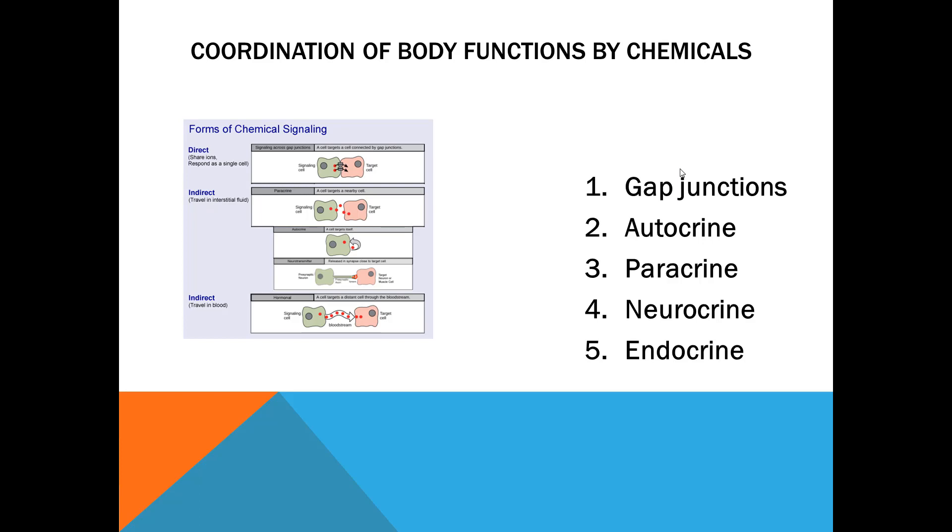One is direct, through gap junctions. One cell will influence the other cell through gap junctions. The other is autocrine—the cell will secrete some chemicals and will act on itself. Paracrine is that the cell will secrete and will act on the neighboring cell through interstitial fluid. Then is neurocrine which we have seen in the neuromuscular junction. Endocrine: here the hormone, chemicals are secreted in the blood and through blood they reach the target cells. Important thing here is target cell.